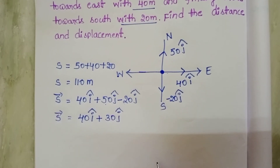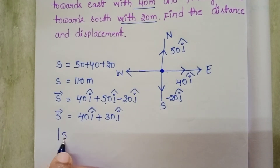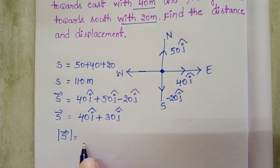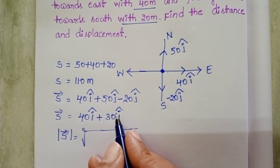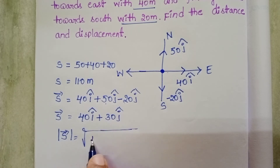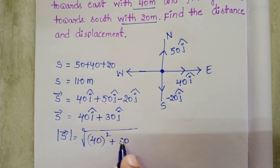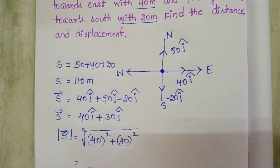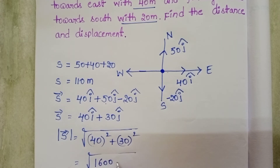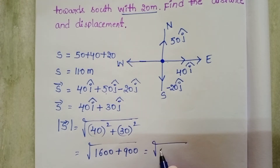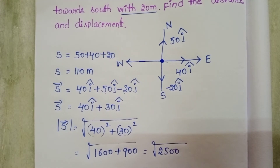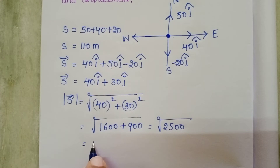The magnitude of displacement equals the square root of x-squared plus y-squared. Here x equals 40 and y equals 30, so it is the square root of 40 squared plus 30 squared — that is the square root of 1,600 plus 900, which equals the square root of 2,500, giving 50 meters.